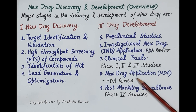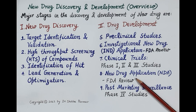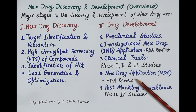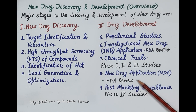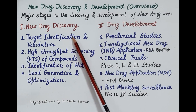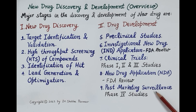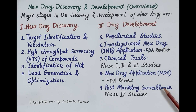FDA review takes around one to two years. If the FDA is satisfied with the safety, efficacy, and ADME profile of the drug, official permission is granted to launch the drug in the market. The drug is formulated, indications are decided, it is manufactured on a large scale, and made available in the market for patients.